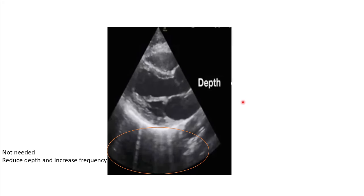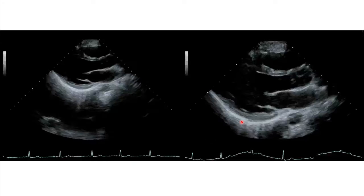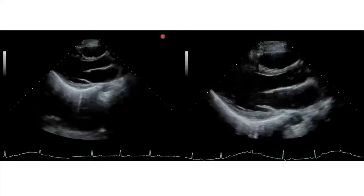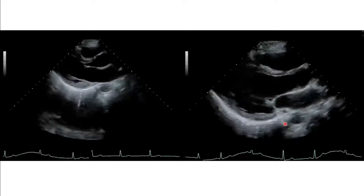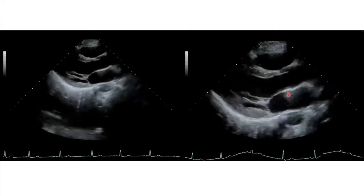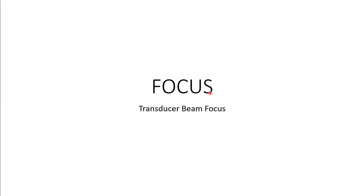Coming to sector depth — whenever you place a probe, if there is unwanted space below the heart, that depth is not required. You should reduce the depth and increase the frequency. When we reduce the depth, the image becomes more clear. A static image shows that a depth of 210 is not required — the optimal depth gives better resolution and more structures are visible.